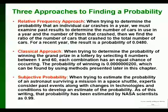The classical approach when you have equally likely outcomes, for example, the lottery, unless it's rigged, every ticket is supposed to have the same chance of being a winning ticket. Now, if it's rigged, then all bets are off. But if the grand prize is going to be chosen by selecting six numbers between one and 60, and each combination has an equal chance of occurring, here's the probability of any one ticket being a winner.